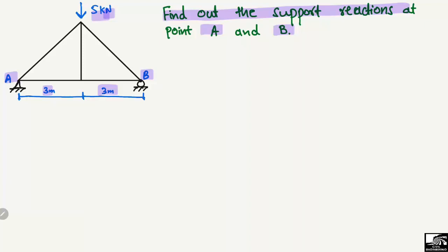We are interested in finding the vertical reaction at point A, represented by RA, and the vertical reaction at point B, represented by RB. Since it is a hinge support, it can also take a horizontal reaction RAX, but in this case it equals zero because there is no horizontal load acting on the truss. The roller support at B can only take vertical load, represented by RB.